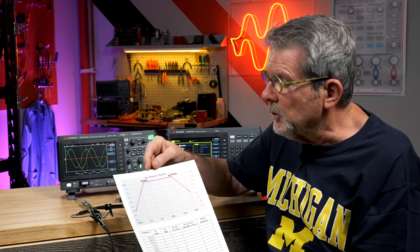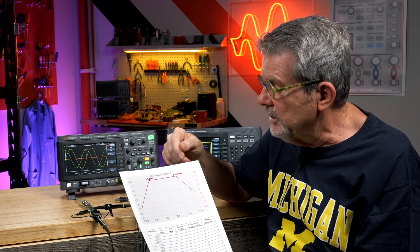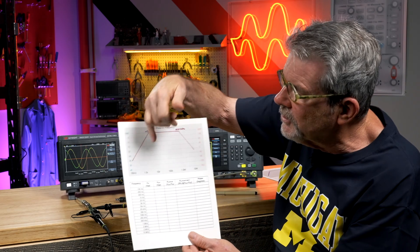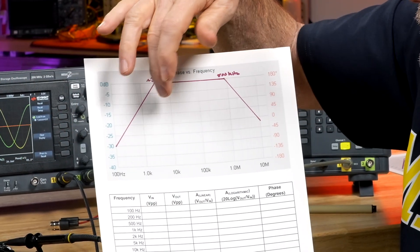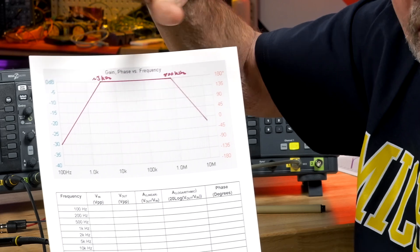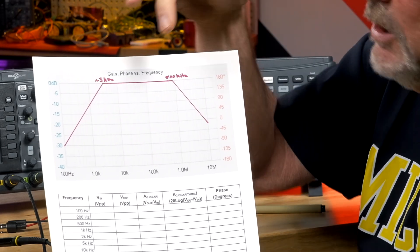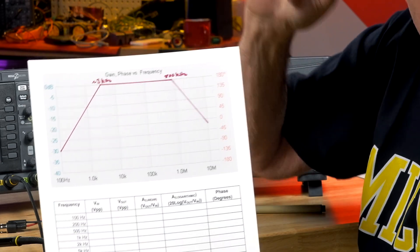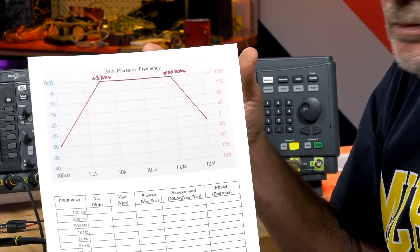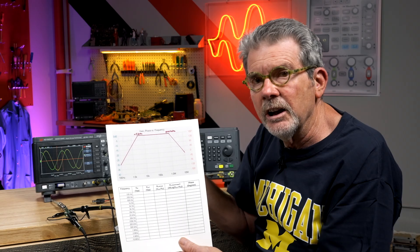I've done some pre-homework with this bandpass filter — the series L, C, and R — and I've determined where the poles and zeros are. There are two poles: one at 3 kilohertz, one at about 800 kilohertz, and there's a zero at zero hertz. Zero hertz is off the graph, so this is plus 20 dB per decade going up to where the pole is, then it rolls off minus 20 dB per decade, which makes it go flat right at 0 dB. Then it hits the second pole and rolls off another minus 20 dB per decade. This is the straight-line approximation.